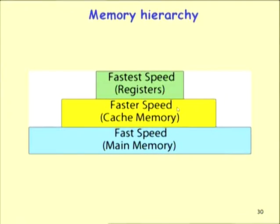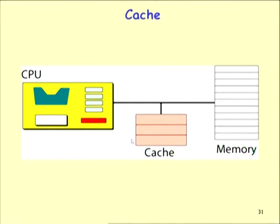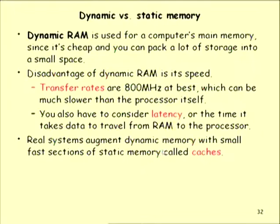In the memory hierarchy, registers offer the fastest speed, cache memory is faster, and main memory is fast. Dynamic RAM uses a capacitor as storage; static RAM uses a flip-flop. To retain DRAM content, constant power and periodic refreshing are required. SRAM requires continuous power but no refreshing — once written, it holds data while powered. ROM retains content even after power is removed.